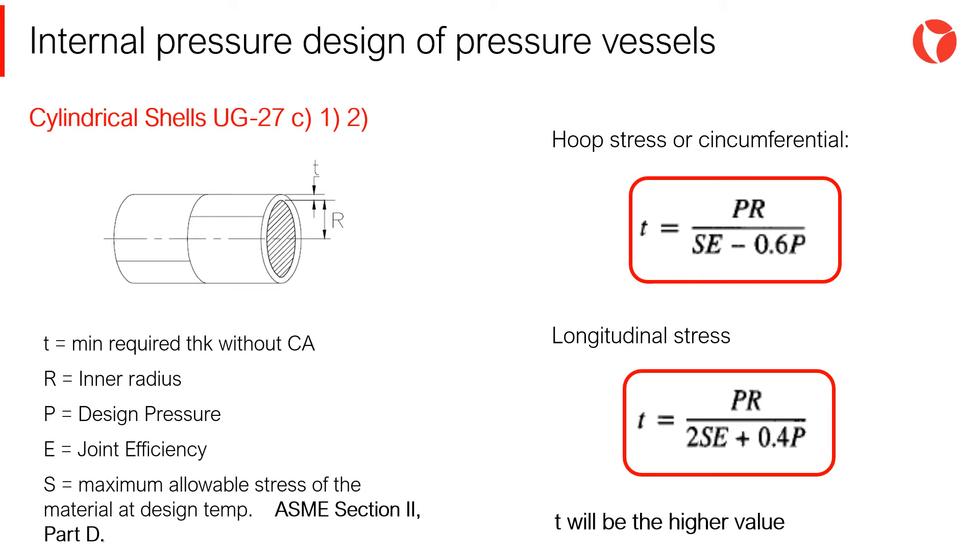Due to the geometry of cylindrical shells, the required thickness for the shell will be the higher value of the hoop and longitudinal stresses verification. The required thickness is a function of the inner radius, the design pressure, the joint efficiency, and the maximum allowable stress of the material at design temperature.